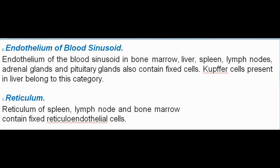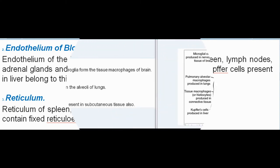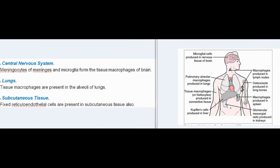The reticulum of spleen, lymph node, and bone marrow contains fixed reticuloendothelial cells. In the central nervous system, meningocytes of meninges and microglia form the tissue macrophages of the brain. In the lungs, tissue macrophages are present in the alveoli.